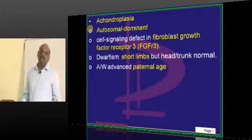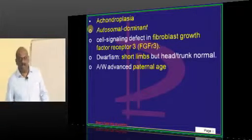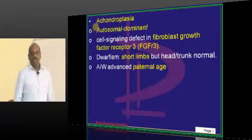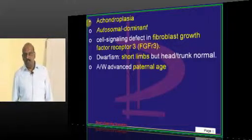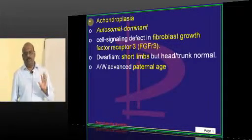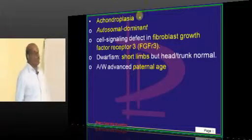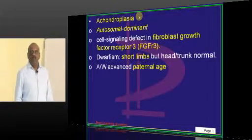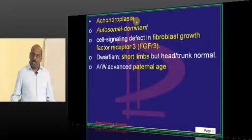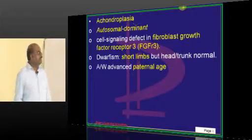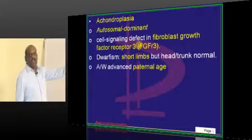The next disease entity in biochemistry-related disorders is achondroplasia. What is the type of inheritance? A favorite question — autosomal dominant. There is a biochemical molecular problem in achondroplasia: a fibroblast growth factor receptor 3 mutation.